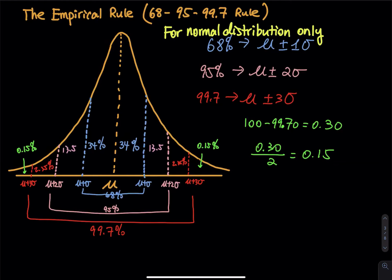So one step to the right and one step to the left gives you 68%. Next, standing right in the middle, you take two steps to the right and two steps to the left — that captures 95%. In the graph you have 34 + 34 + 13.5 + 13.5 = 95.